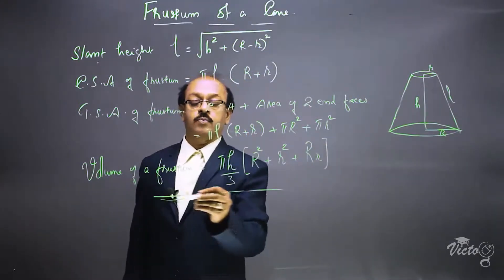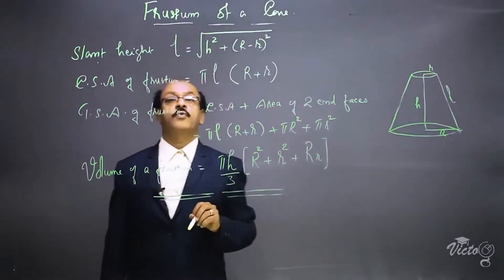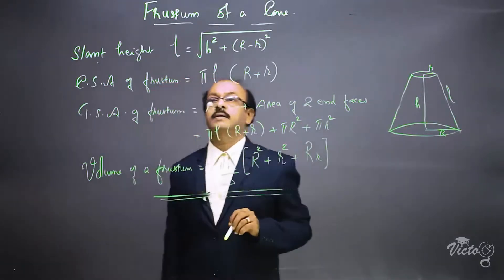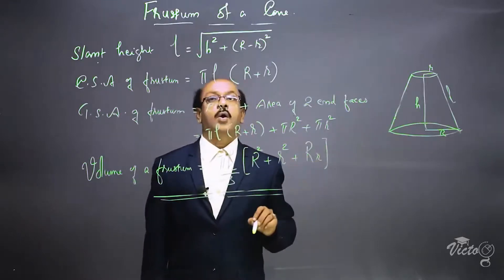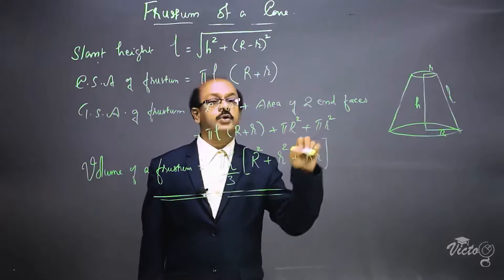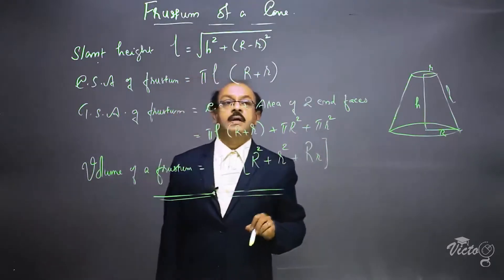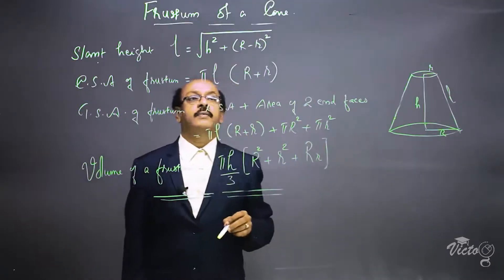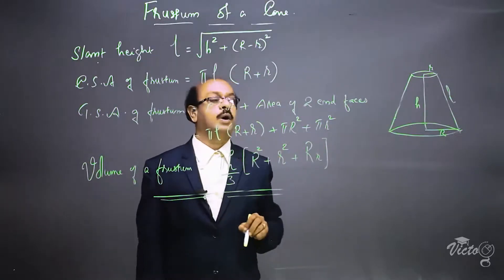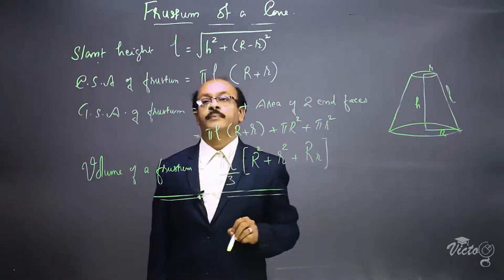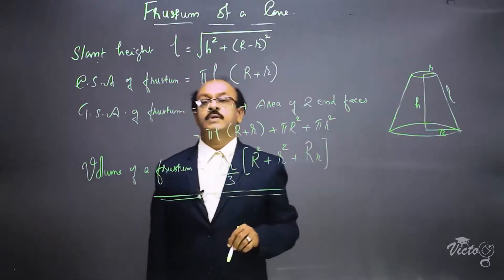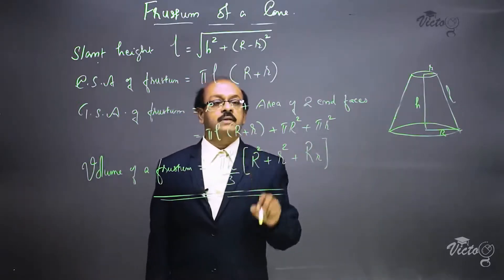To recap the formulas for frustum of a cone: the slant height l equals the square root of h² + (R − r)². The curved surface area CSA equals π·l·(R + r), where l is the slant height. The total surface area TSA equals CSA plus the area of the two end faces.